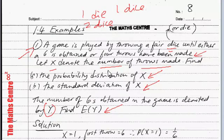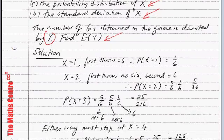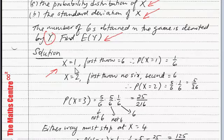Now let's look at the solution. X is the number of throws. X equals to one means after the first throw you are done because the first throw is a six. Remember, we throw until we get a six or until we finish four throws. So if X equals to one, the first throw is a six, and the probability of X equals to one is just one over six.